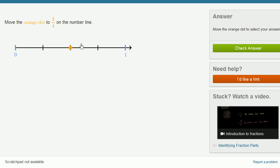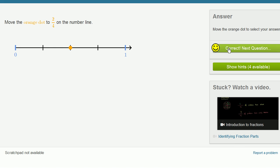The number of sections has to be the number in the denominator. And then the number in the numerator is how many of those we move the dot to. Let's do one more of this. This is a lot of fun.